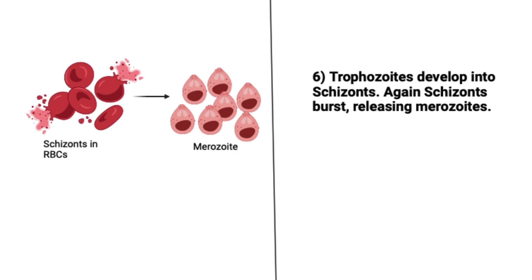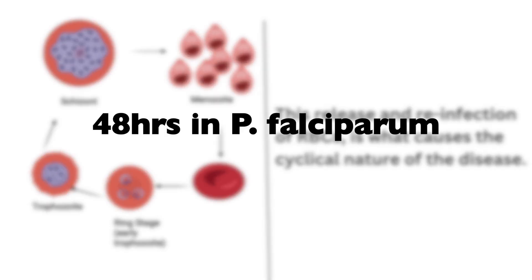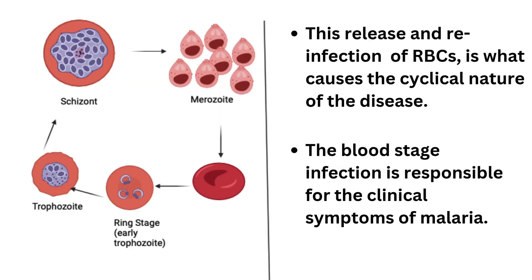Once the merozoites are released, just like before, they find new red blood cells to begin their own developmental stages — analogous to humans reaching adulthood and having children of their own. In Plasmodium, the release of the merozoite from red blood cells and reinfection of new red blood cells takes approximately 48 hours. It is this repeated cycle of reinfection and release that causes the symptoms associated with malaria, alerting the human host that something is not quite right.